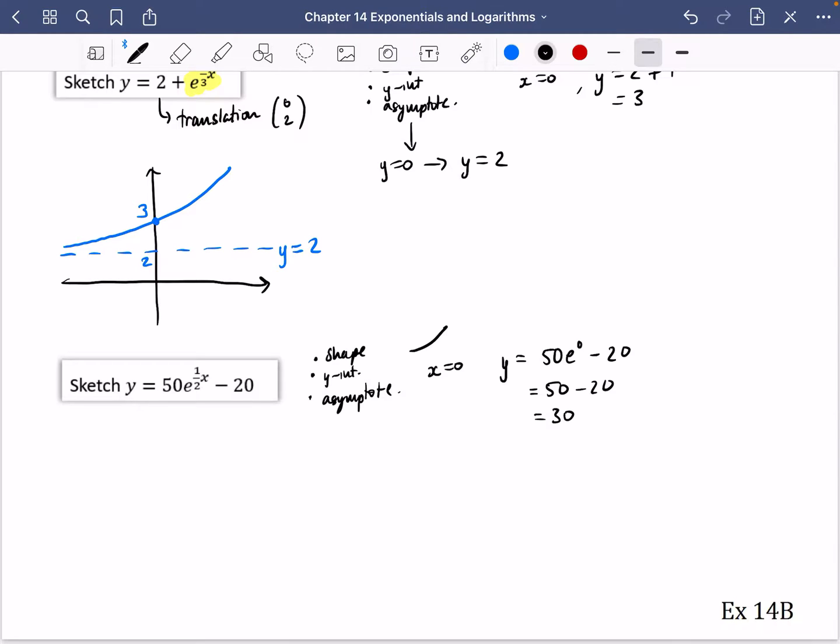And this time the asymptote, because the whole thing has a minus 20 here, this means that it's going to be translated 20 spaces down. So the asymptote is now going to be, instead of a y equals 0, it's going to be y equals minus 20. So let's start off by drawing in the asymptote of minus 20. So here is y equals minus 20. And we want it to cross where y is 30. So we want it to cross somewhere positive. So that just means all you need to do for your graph, maybe I should have not put that 30 quite so high up.